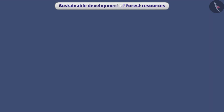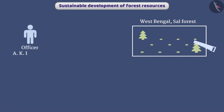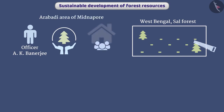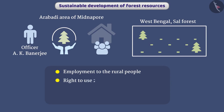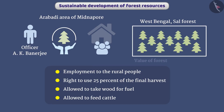Sustainable development of forest resources can be achieved. For example, in West Bengal, the Sal forest was badly damaged due to excessive exploitation. Officer A.K. Banerji started a strategy in the Arabadi area of Midnapur, under which local people were involved in forest conservation work. This provided employment to rural people. They were given the right to use 25% of the final harvest and were allowed to take wood for fuel and feed cattle. With the consent and active participation of local people, the Sal forest of Arabadi, once considered useless, became prosperous again, with its value estimated at 12.5 crores.